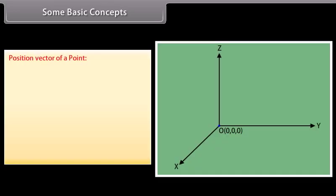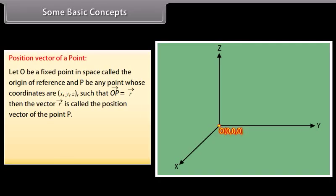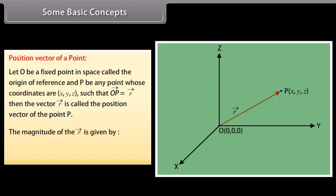Some basic concepts: position vector of a point. Let O be a fixed point in space called the origin of reference, and P be any point whose coordinates are X, Y, Z such that vector OP is equal to vector R. Then the vector R is called the position vector of the point P. The magnitude of the vector R is given by mode of vector R equals square root of X squared plus Y squared plus Z squared.